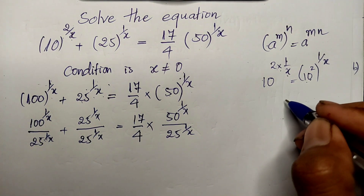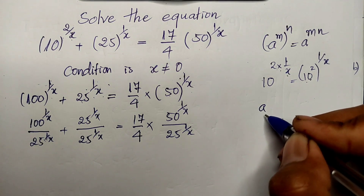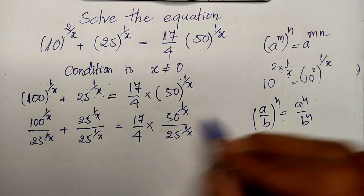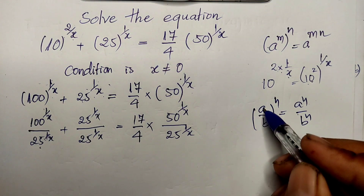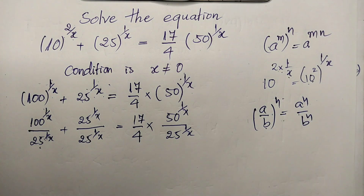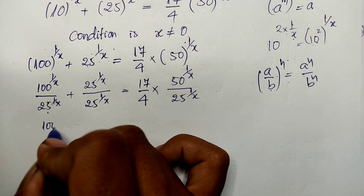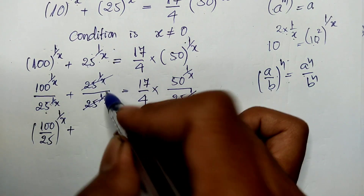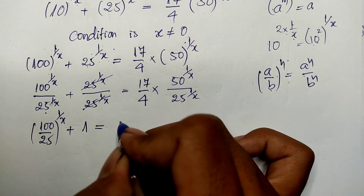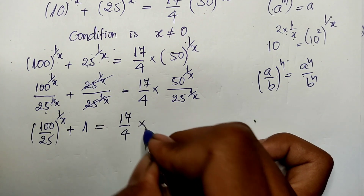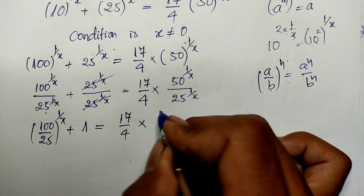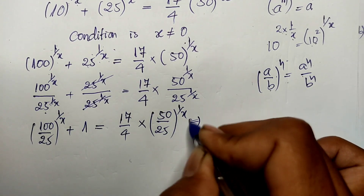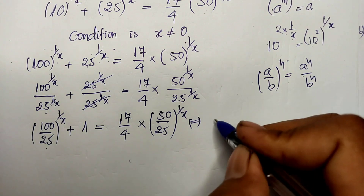We use the rule: a divided by b, power n, equals a power n divided by b power n. So we can write 100 divided by 25, power 1 over h. The second term simplifies to 1. On the right side, 50 divided by 25, power 1 over h. So we get: 100 over 25 is 4, so 4 power 1 over h, plus 1, equals 17 over 4 multiplied by 2 power 1 over h.